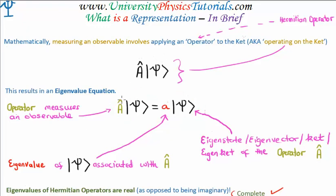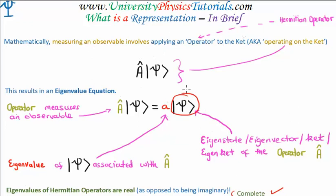What happens is, you operate using an operator on our quantum state, and you get back the same quantum state but with a multiplicative constant — a scalar. And this scalar is known as the eigenvalue associated with the particular quantum state. So it might be the literal value of position or momentum of that particular state. The ket here is known as an eigenstate, or an eigenvector, or an eigenket of the operator A, and the eigenvalue is associated with the operator as well.